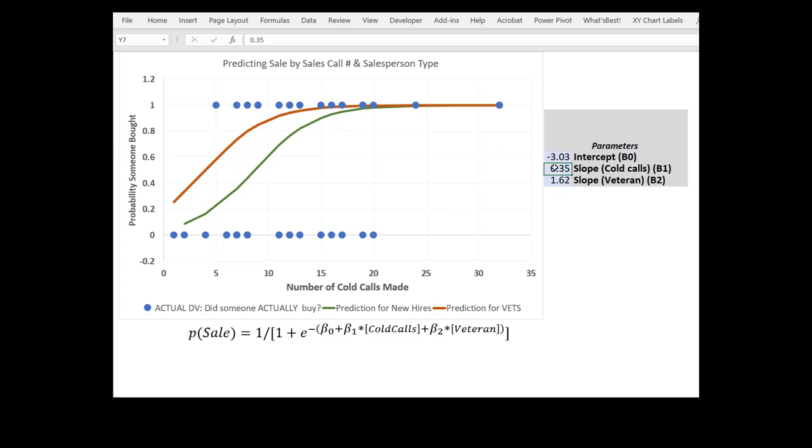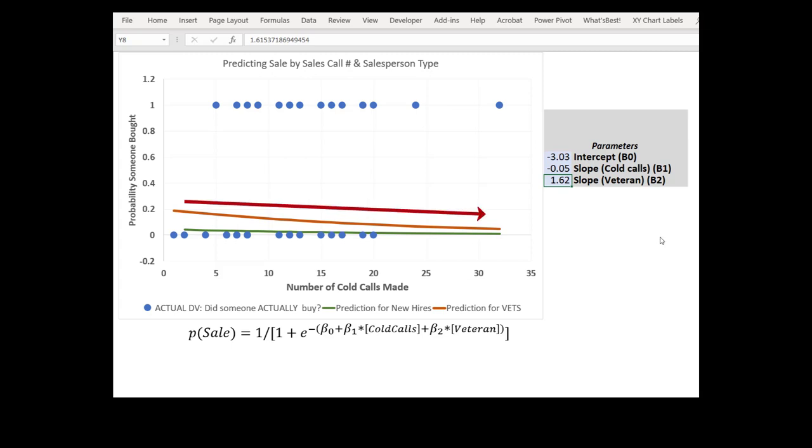Let's switch this to negative. What do you think will happen? I'll try negative 0.25. A little hard to see in this chart because of the scaling, you can see that it's actually decreasing. Let's try something negative and smaller. There we go. As cold calls increase it reduces the probability that we'll close a sale.